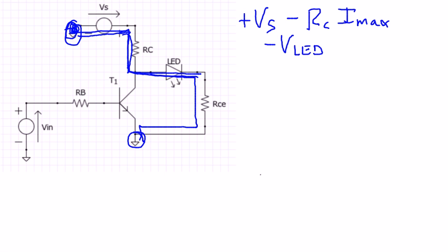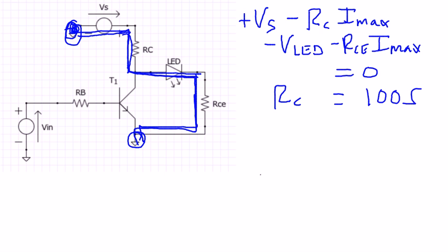The LED has a specified voltage drop of 2 volts, but it's a voltage drop, we'll just say minus VLED. Then we come across this next resistor, so that's another voltage drop, RCE times the current Imax, and we get to ground again, so that equals zero. By rearranging and solving for RC, given Imax is 10 milliamps, you find that RC needs to be at least 100 ohms.